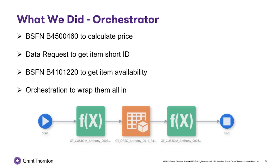The first thing I did was find the two business functions that calculate price and provide item availability. I have them listed here on the screen. I created an orchestration to include all these objects. In the first step in the flow, I used the calculate price business function. The second box is a data request to get the item short ID for the item availability business function, because it doesn't accept the second item number. Finally, I used the item availability business function as the last step. Now let's take a look at the tool I used to send this data and display the response from the orchestration.